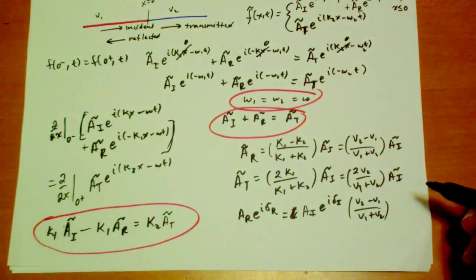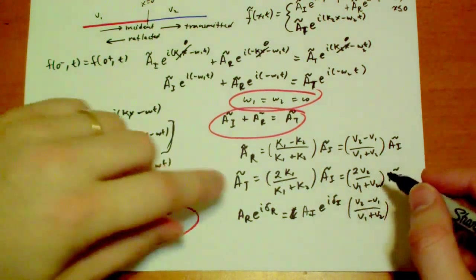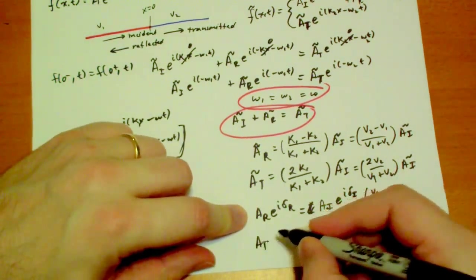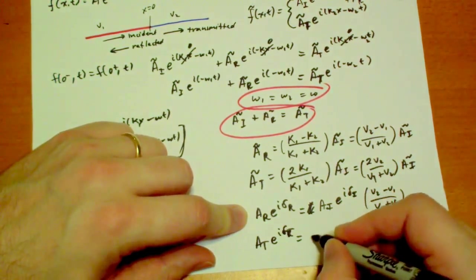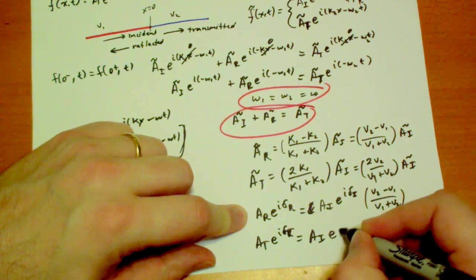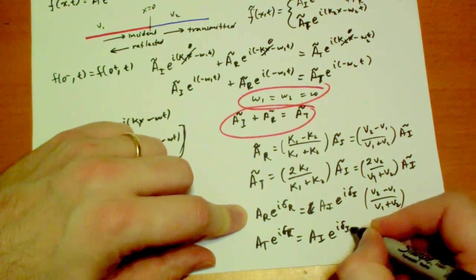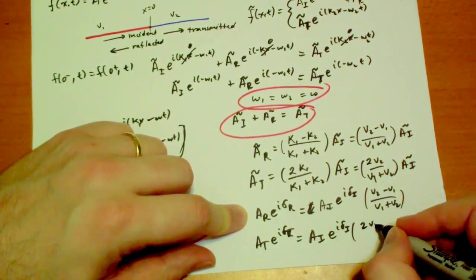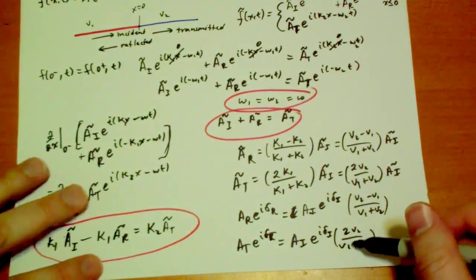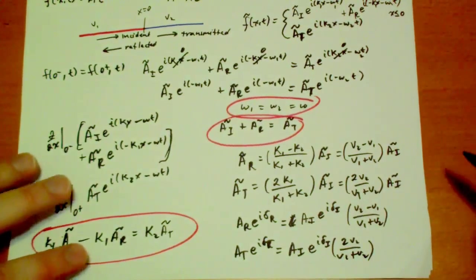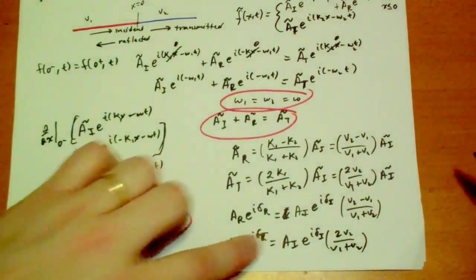So here it's obvious that dr has to equal di unless this v2 is smaller than v1, in which case the dr and di are going to be out of phase by 180 degrees. For the transmitted, you always get a positive coefficient. The dt is equal to ai e to the i di times 2v2 over v1 plus v2. And so this implies that this is always positive. The transmitted wave has the same phase constant as the incident wave.